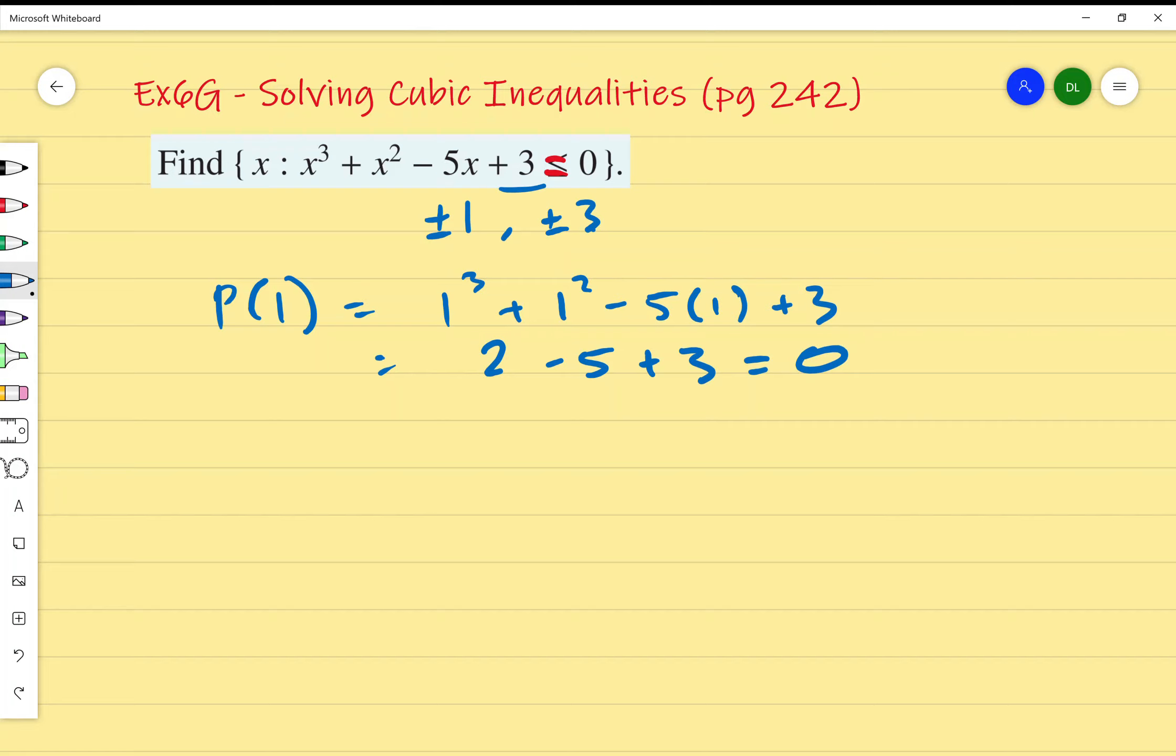So if I've got p of 1 gives me 0, therefore that is a factor. So I said that x equals 1. What I'm going to do is rearrange it so I get everything on one side and 0 on the other. In other words, I'm going to take away 1 from both sides. x minus 1 equals 0. So x minus 1 is our factor.